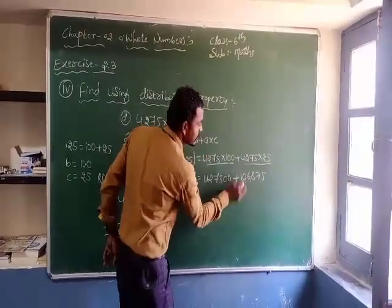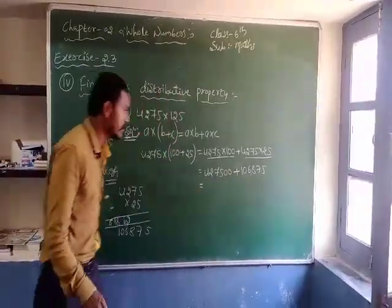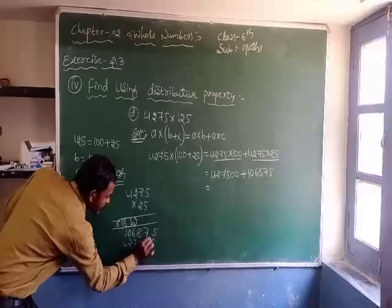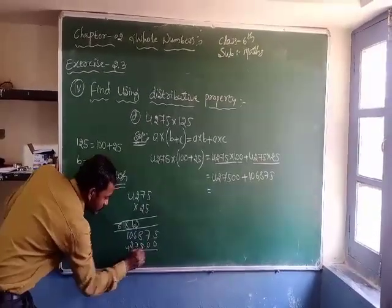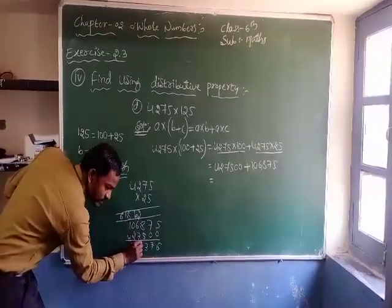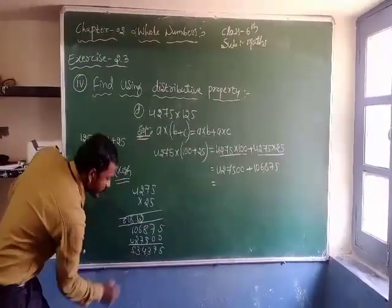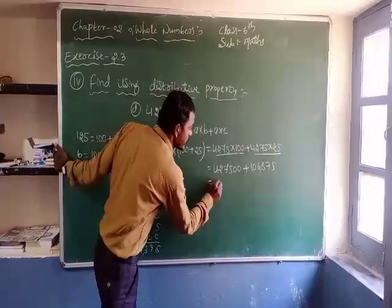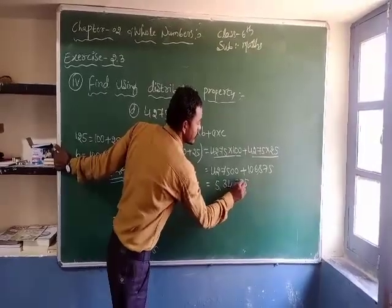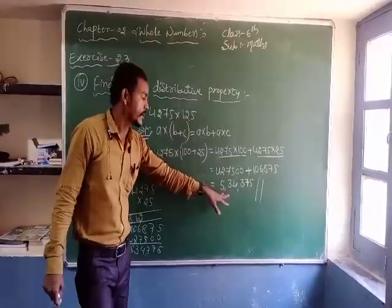So we have to find the sum of these two numbers: 4,275,000 plus 106,875. Adding: 5 plus 7 is 13, carry 1. 7 plus 8 plus 6 is 14, carry 1. The sum gives us 534,375.